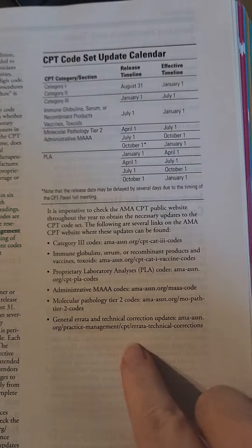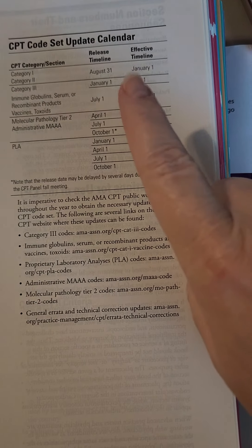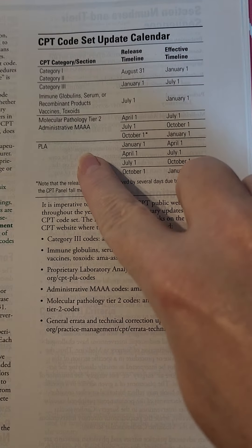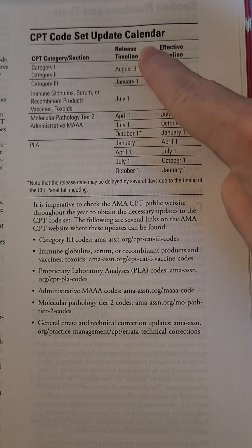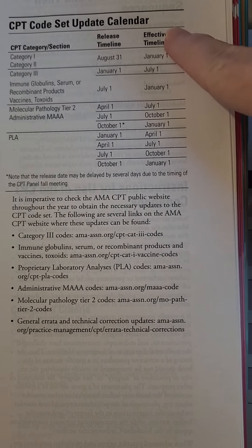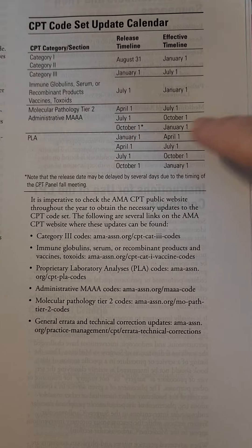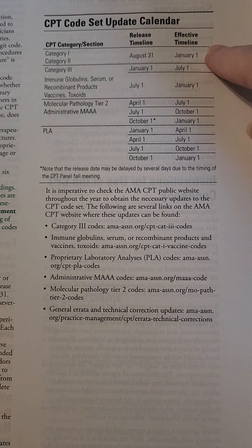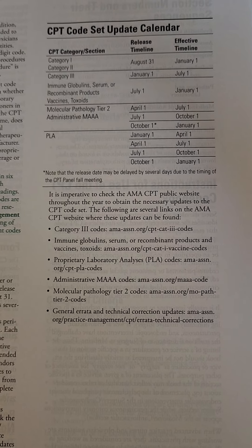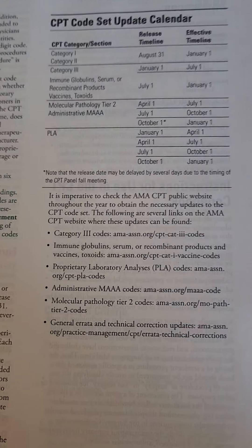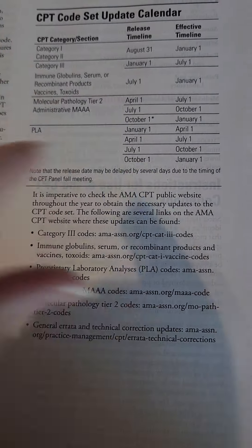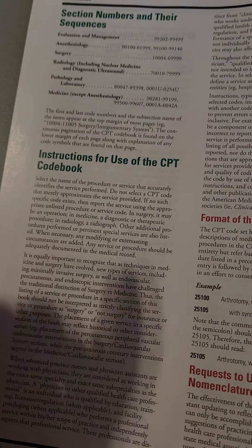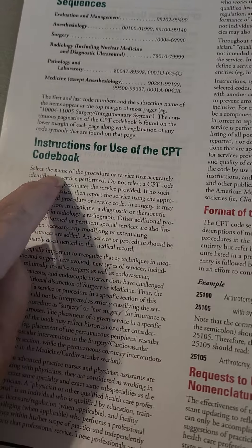The next thing you should know where it is is the page that has your code sets. It lists out every set of codes, when the codes are released, and when they become in effect. Know where this page is so you can get to it quickly — usually there's just one question about this particular item.